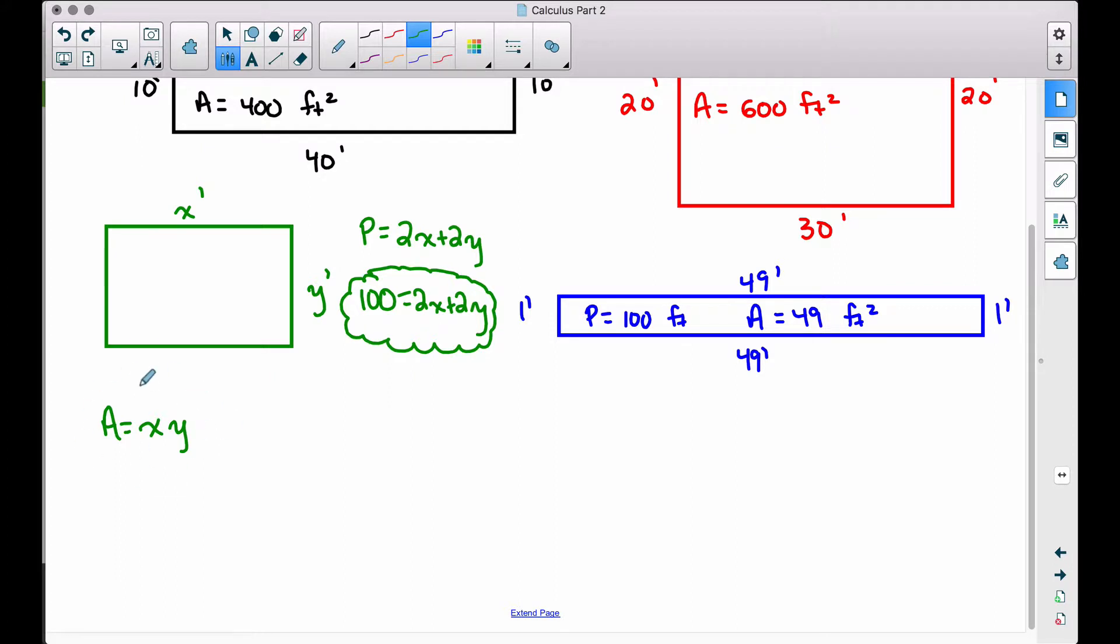So taking my area equation and sliding it over here to the side, let's get x by itself. It does not matter which variable you get by itself here. So what I've done here is I've subtracted 2y to the left-hand side, and we can divide everything by 2 to get x by itself. Therefore, we have 50 minus y is equal to x. So let's take this x equals 50 minus y, let's substitute it into this x in our area equation.